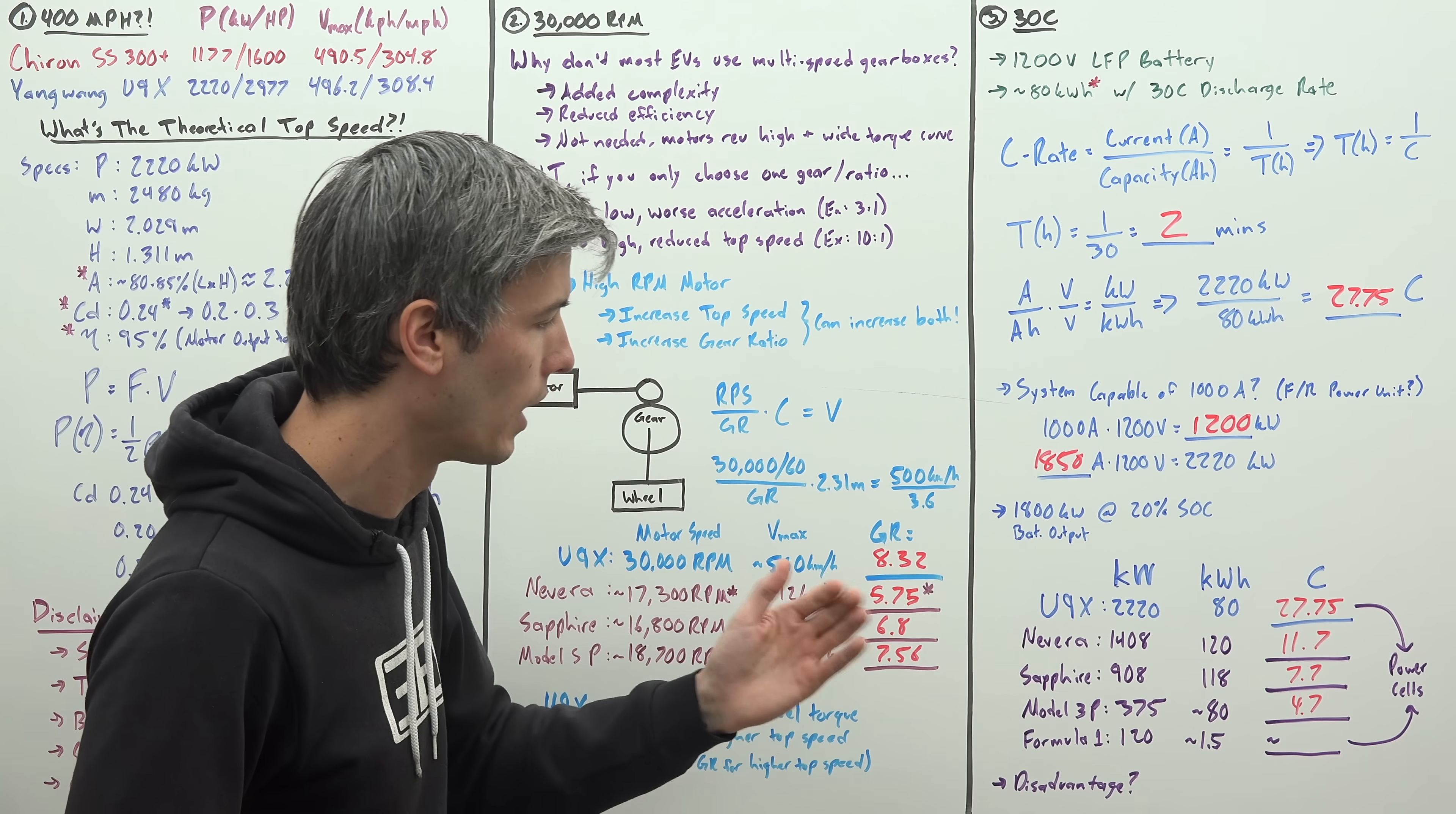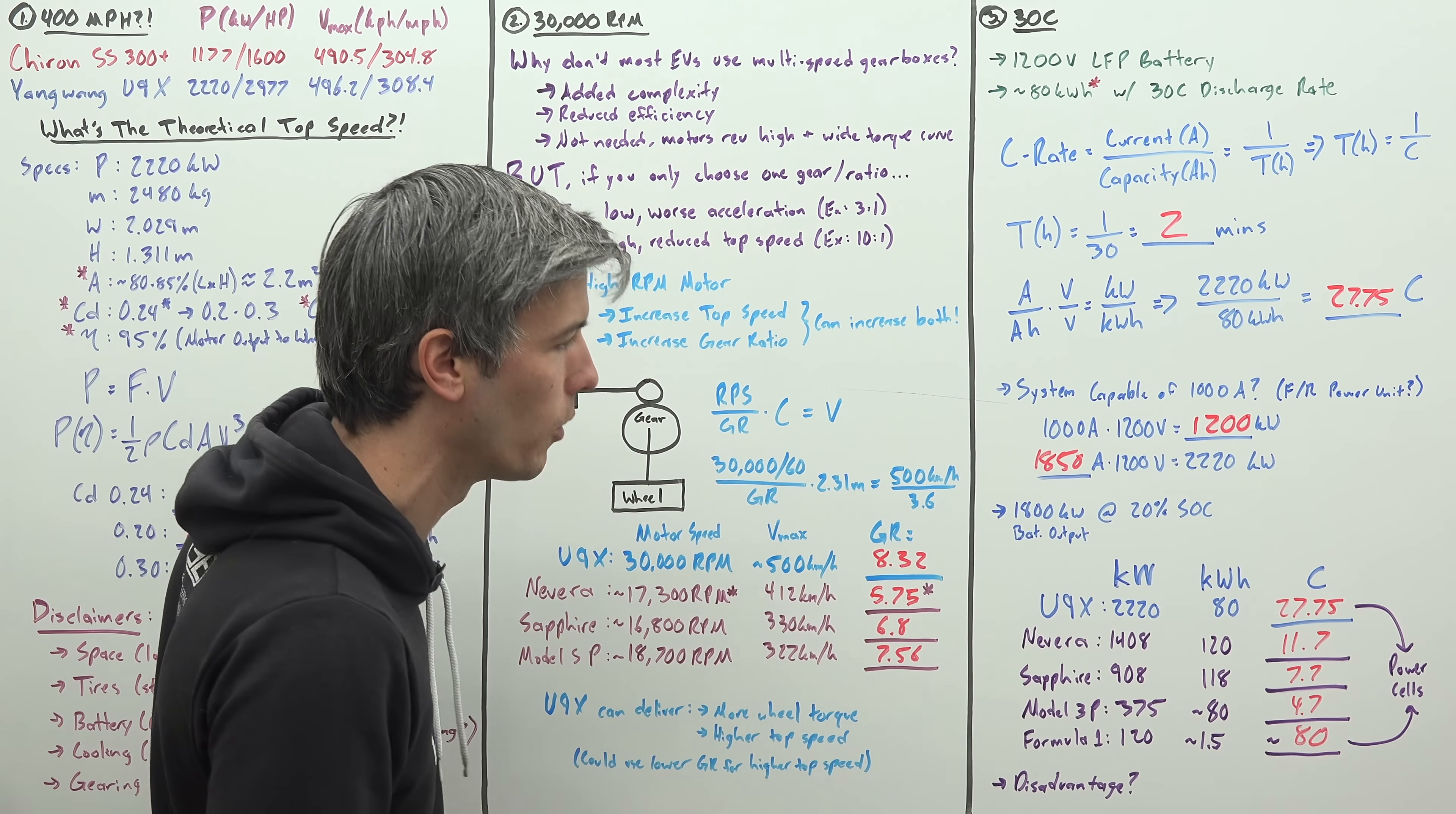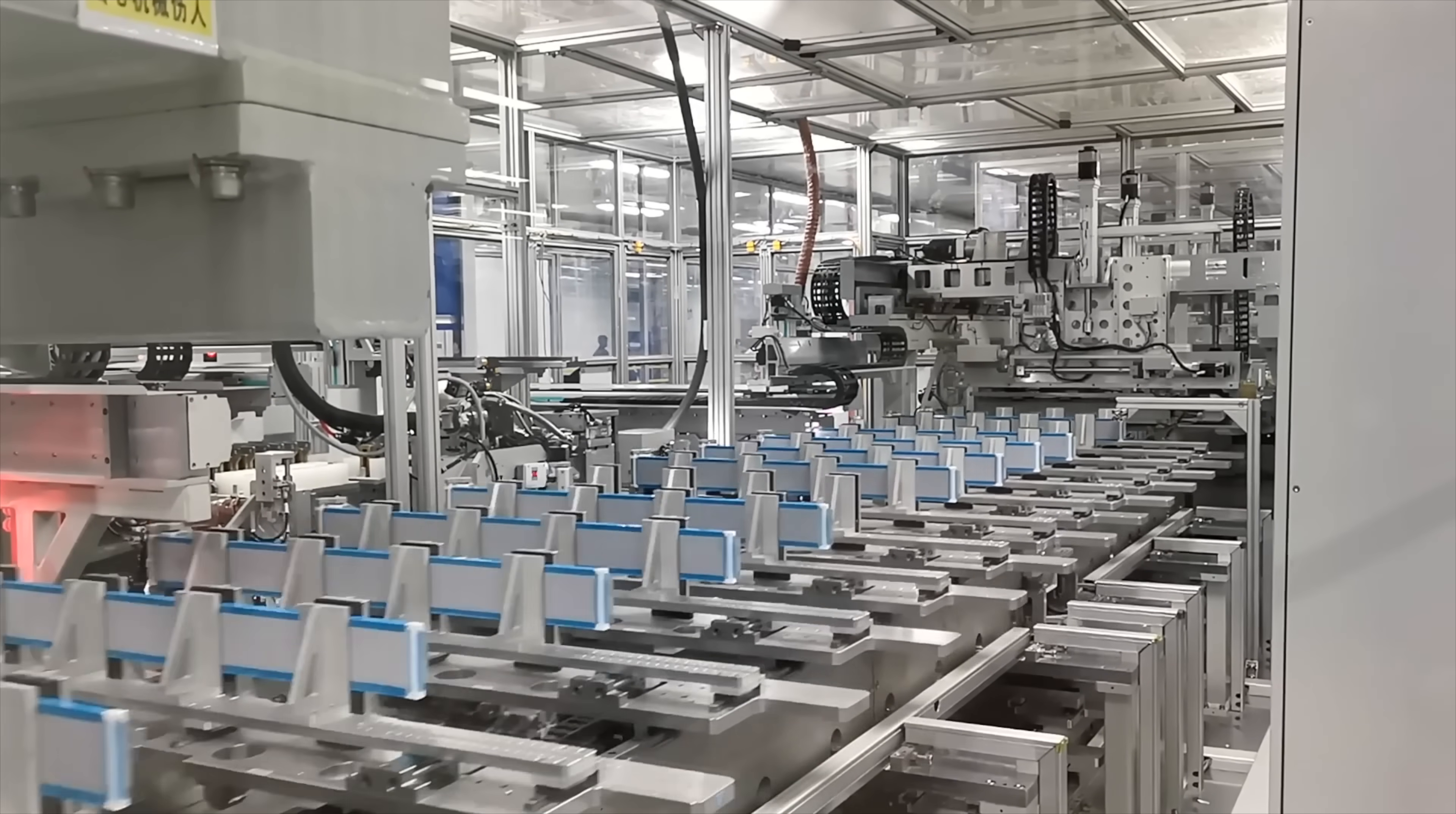So Formula One, for example, they've got 120 kilowatt electric power coming from a roughly 1.5 kilowatt hour battery pack. Could be a little bit smaller, could be a little bit larger. The minimum is 1.1 kilowatt hours, but that would give you a C rate of around 80. So absurd, right? So the thing that's going to differ is that the design of the battery cells is going to much more favor power than it favors energy. So of course, these are going to have longer range, while the U9X will have more power output relative to the size of its battery.